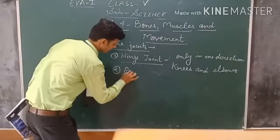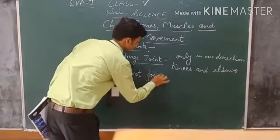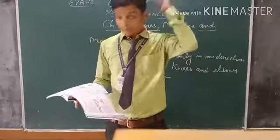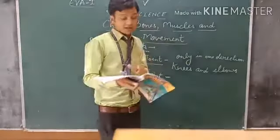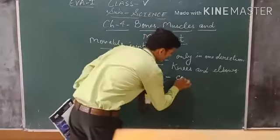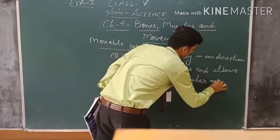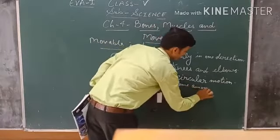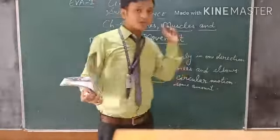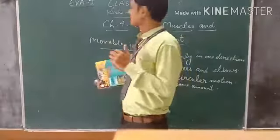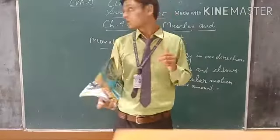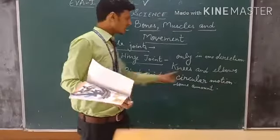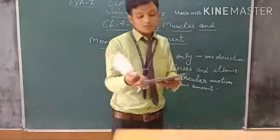The second type is the pivot joint. This joint occurs where the skull meets the first vertebra. It allows some amount of rotational motion — we can turn our head to some extent, but we cannot rotate it fully. It is found in our skull.